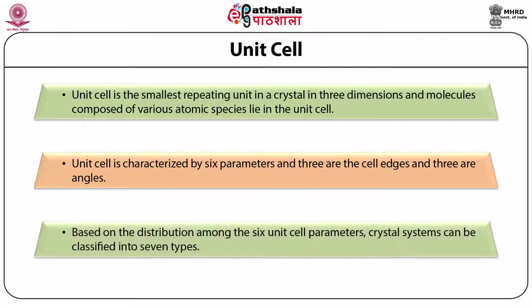Based on the distribution among the six unit cell parameters, the crystal systems can be classified into seven types. Whether your molecule crystallizes as a small molecule or a protein molecule, the total number of crystal systems is always seven, irrespective of whether the molecule contains a small number of atoms or thousands of atoms like proteins or enzymes.